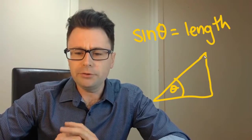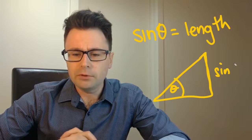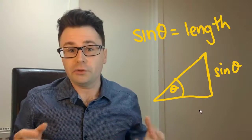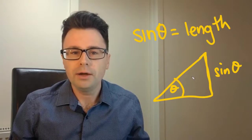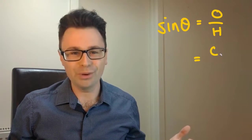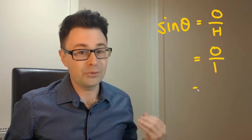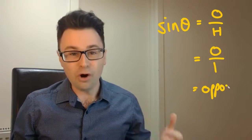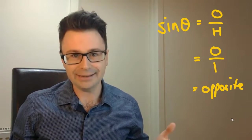Now, if you look at SOHCAHTOA, it does show that it's a ratio, but for the majority of methods, we're studying within a unit circle where the hypotenuse equals one. So if the hypotenuse equals one, sine theta equals opposite divided by one, which means opposite. So it actually is the length opposite.